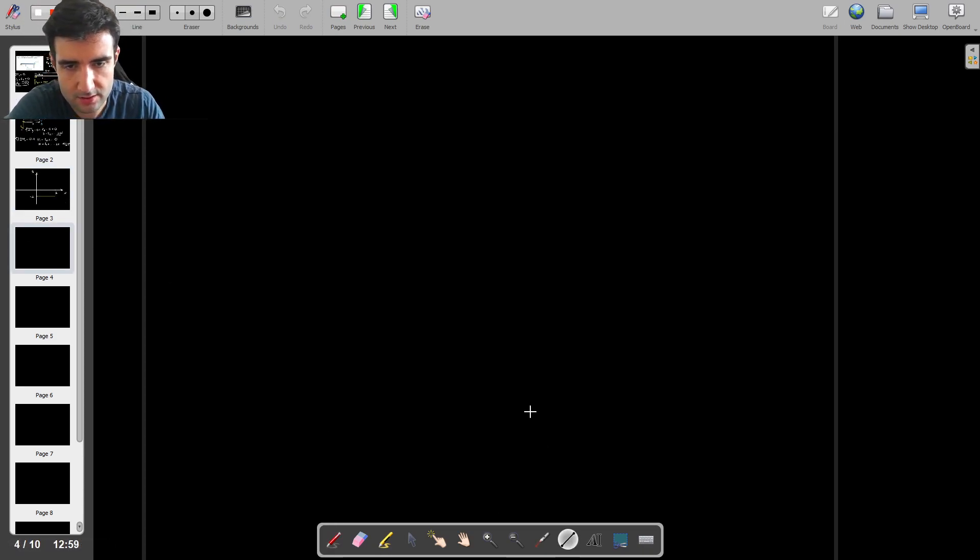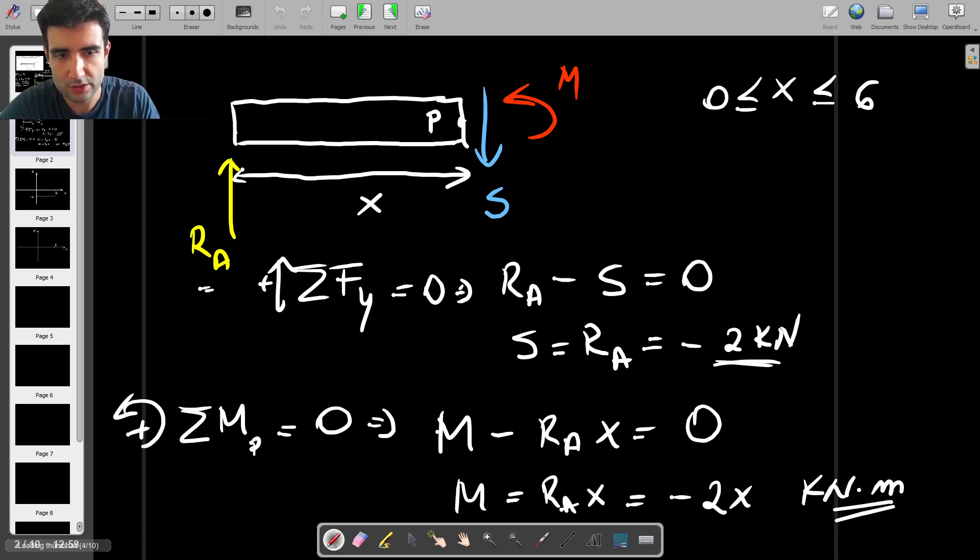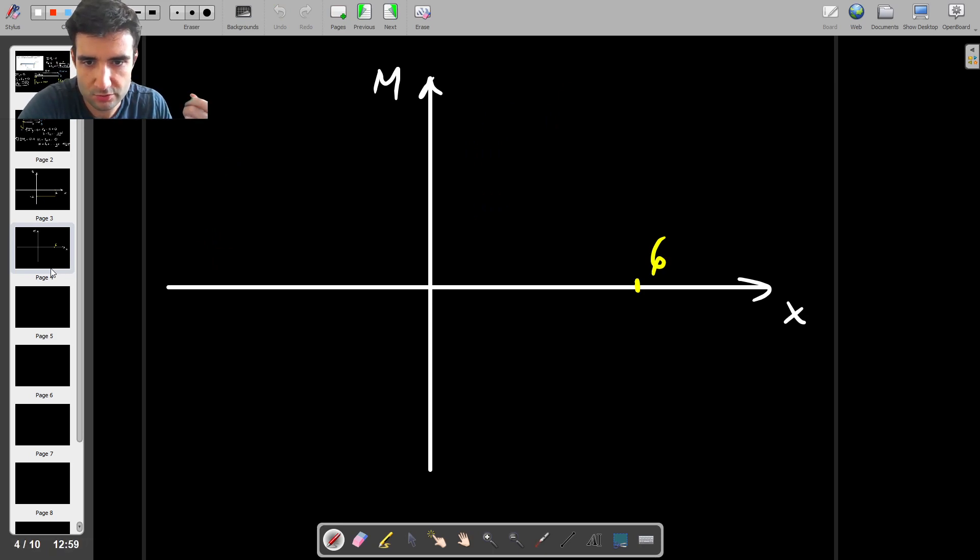And then for the bending moment, we have something similar. So we don't have a constant function anymore. We have a linear function. So we have X, we have M, then we have 6 here. So the function that we're now trying to plot is this. So we have the moment going from 0 to, well, that goes from X equals 0 to X equals 6. In other words, the moment is going to go from 0, and actually, I think I'm going to want to make this a bit closer to the origin, just because I'm going to go way down on the Y-axis.